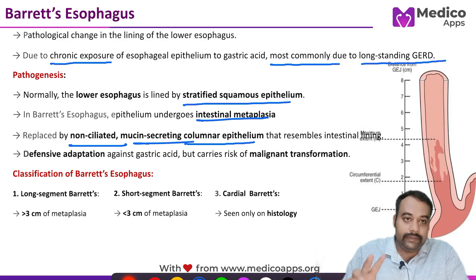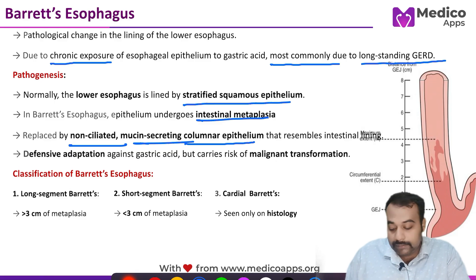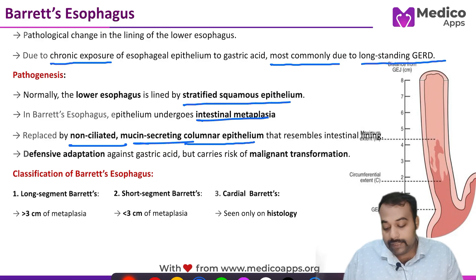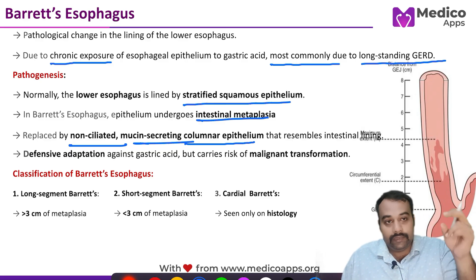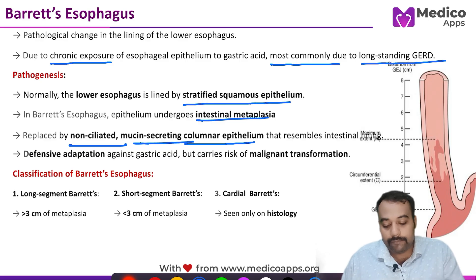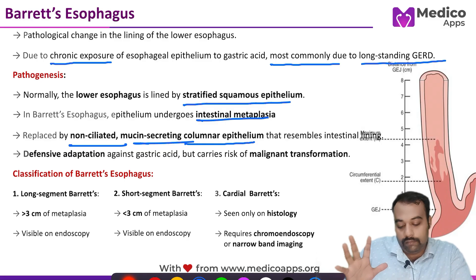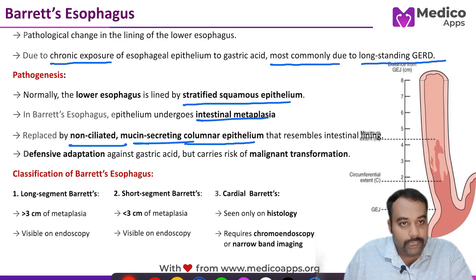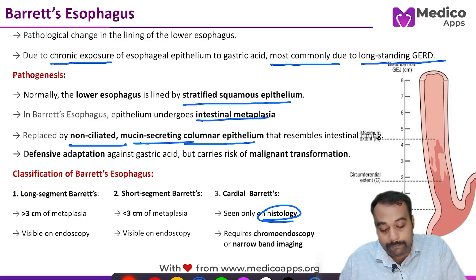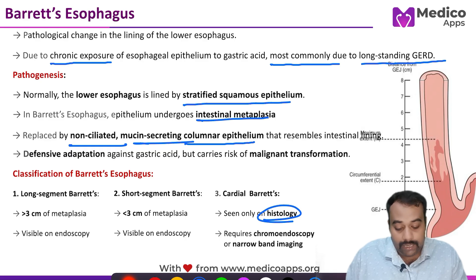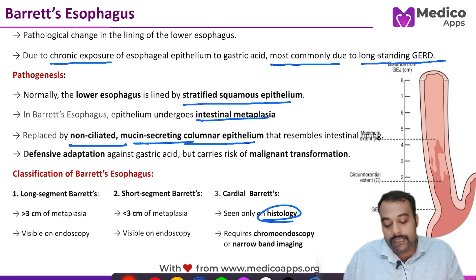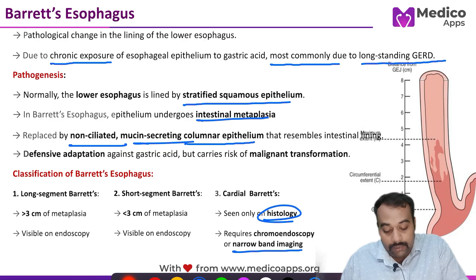Long segment Barrett's is when the length of the Barrett segment is more than three centimeters. Short segment Barrett's is when the length is less than three centimeters. Cardiac Barrett's is typically not seen with the naked eye and can only be appreciated on histology. To identify cardiac Barrett's, we use chromoendoscopy or narrow band imaging — modern techniques that increase the efficacy of endoscopic evaluation.